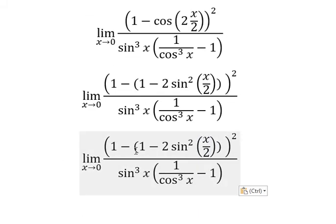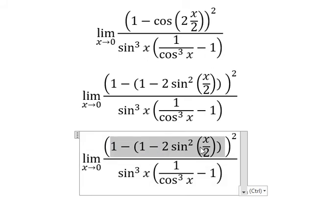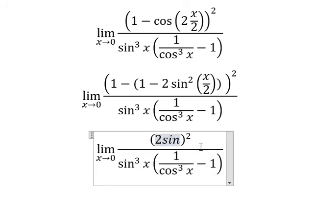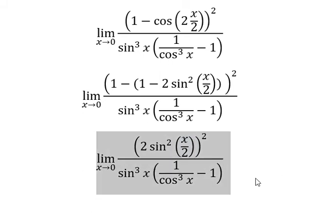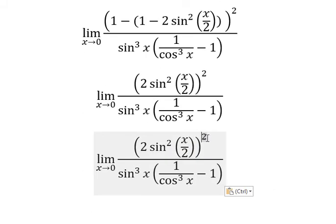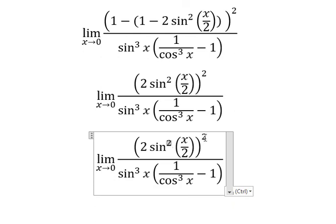1 minus 1 — we cancel negative and negative, so we have positive. We have the power 2: 2 to the power 2 gives us number 4. Number 2 multiplied by number 2 gives us number 4.